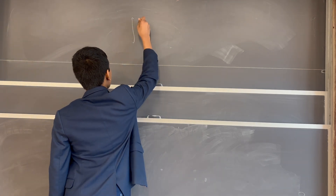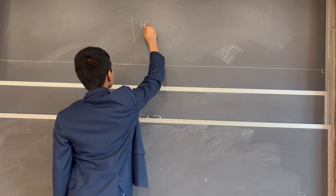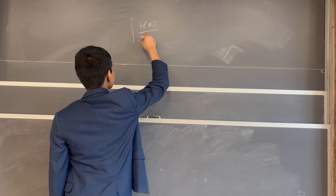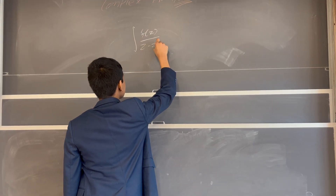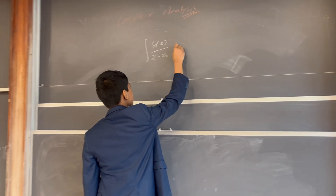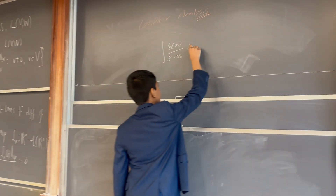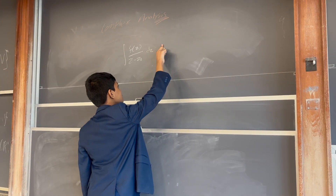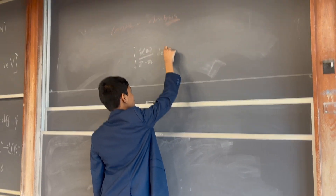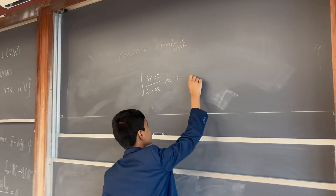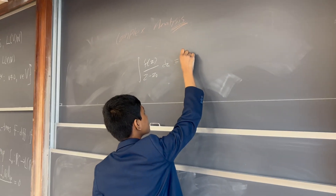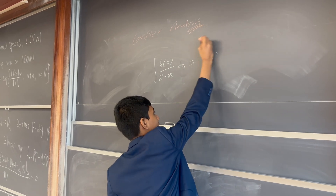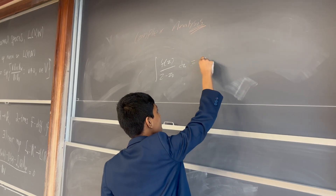The integral of f(z) divided by (z minus z-naught) dz is equal to 2πi times f(z-naught).